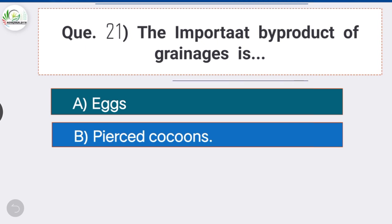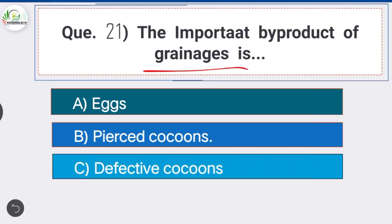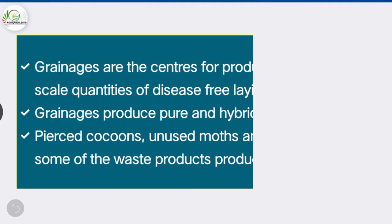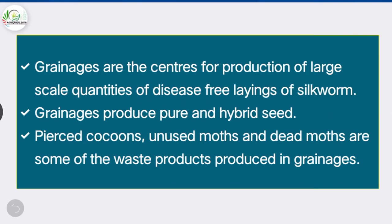Question number twenty-one: the important byproduct of grainage is — option B is the correct answer — pierced cocoons. Grainages are centers for large-scale production of disease-free layings of silkworm, producing pure and hybrid seed. Pierced cocoons, unused moths, and dead moths are some of the waste products produced in grainages.